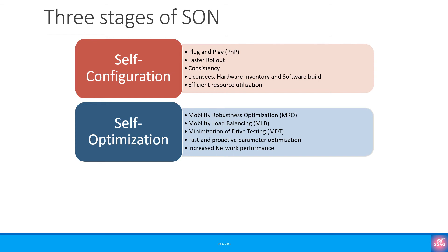Looking at self-optimization features: Mobility Robustness Optimization or MRO, for example, ensures that handovers succeed and the device is handed over to the right cell. Mobility Load Balancing or MLB is used to hand over UEs from a congested cell to an uncongested cell, so the load is evenly distributed across cells. There are also interesting features like MDT, or Minimization of Drive Testing. We will look at many of these features in future videos.